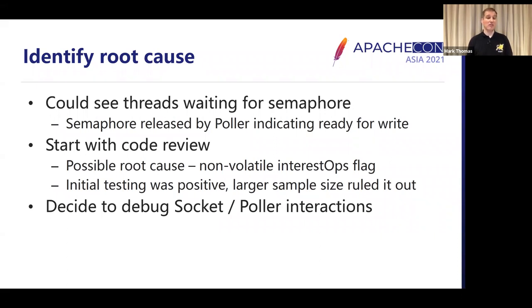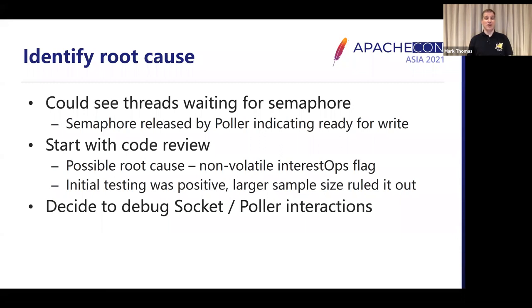That may or may not be a problem — it depends on the exact order those accesses happened. It looked like a possible candidate, so I tried a quick test, made it volatile, rewrote the test case. Initially it looked really good — it's not happening. But remembering my statistics guide, I did some more tests with a larger sample size, and that showed me it made not the slightest bit of difference. So we put that back to non-volatile and thought, we need to really look at what's going on between the socket and the poller.